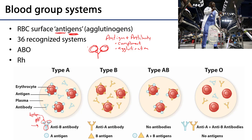There are hundreds of recognized surface membrane proteins on erythrocytes, organized into 36 different recognized systems. Of these 36 systems, the two most well-known are the ABO group and the Rh group. With ABO, you can either be type A, type B, type AB, or type O.